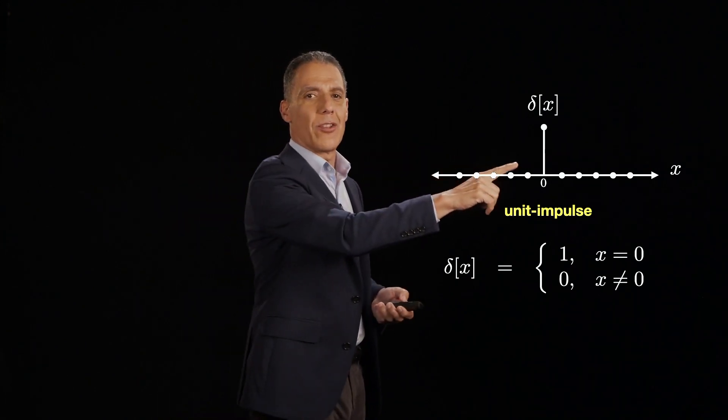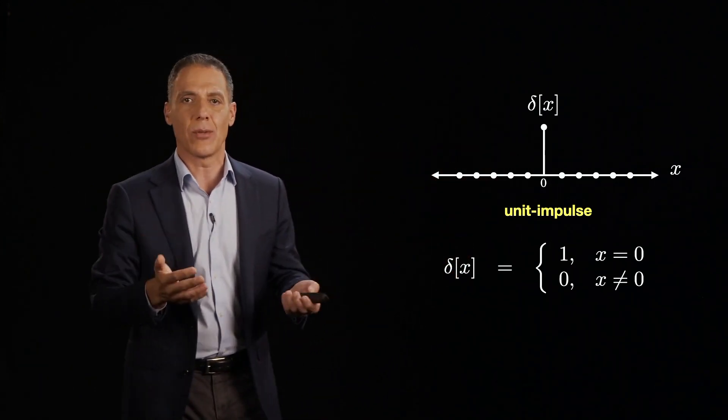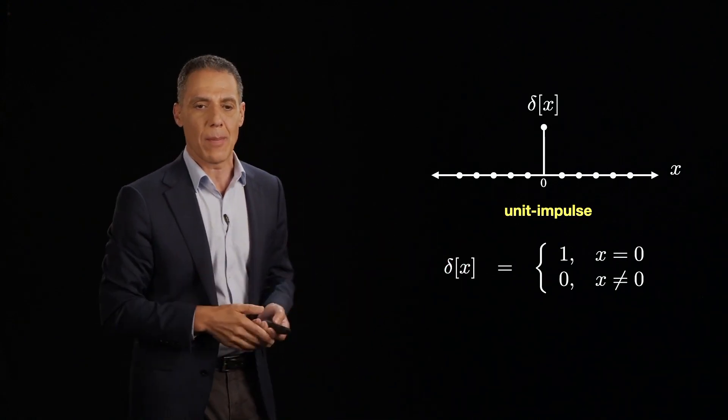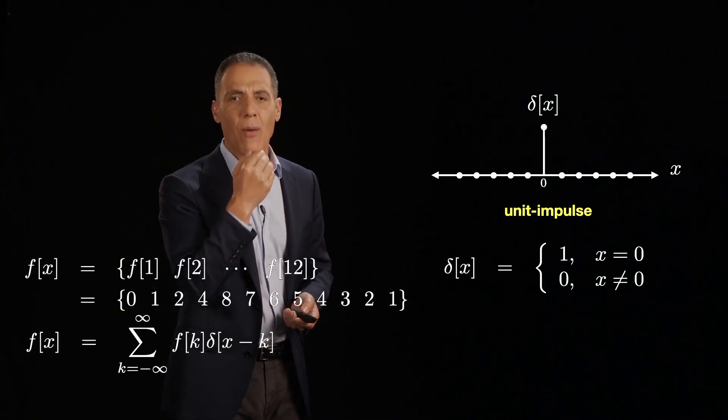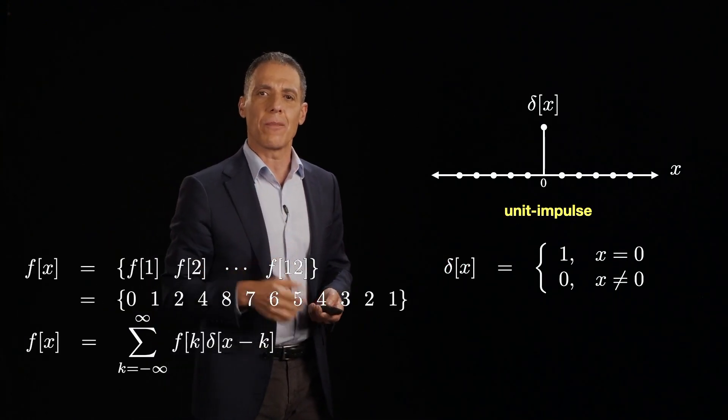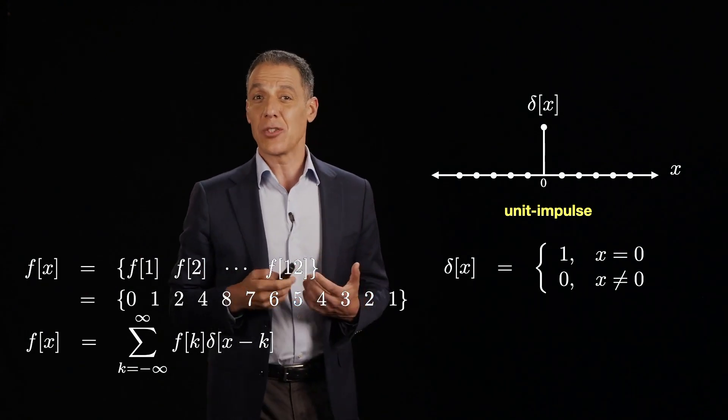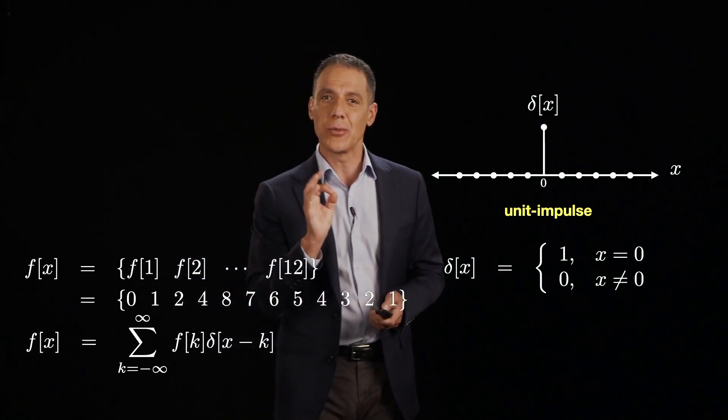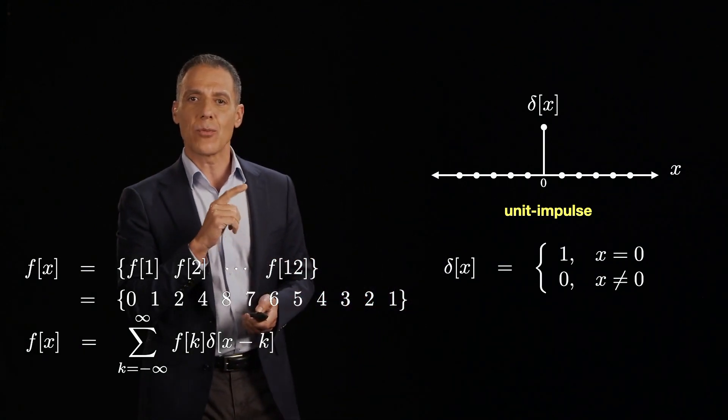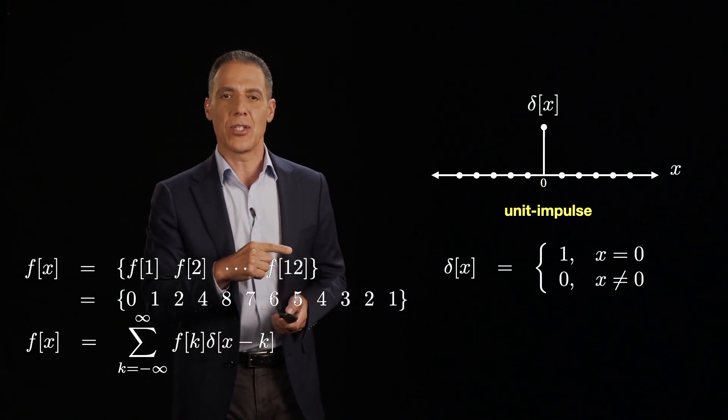It's got a single unit value at the origin and 0 everywhere else from left to right. And here, by the way, I put the origin at the middle, but where that is is sort of irrelevant. Whether I'm centered at 0 or 0 is on the left doesn't really matter. Now, why is this an interesting signal? So I'm going to do something that seems really trivial, but it's going to turn out to lead to a really beautiful formulation.